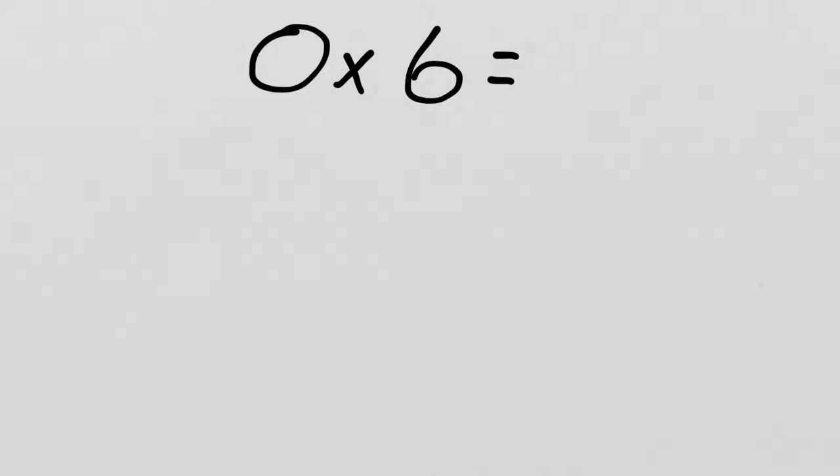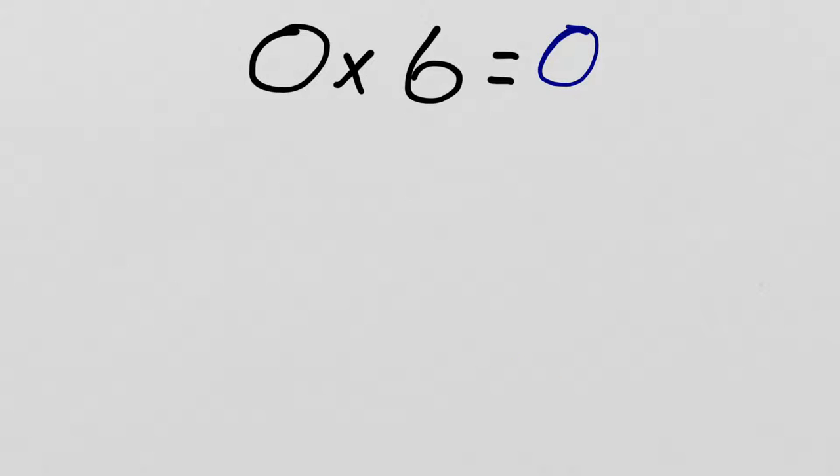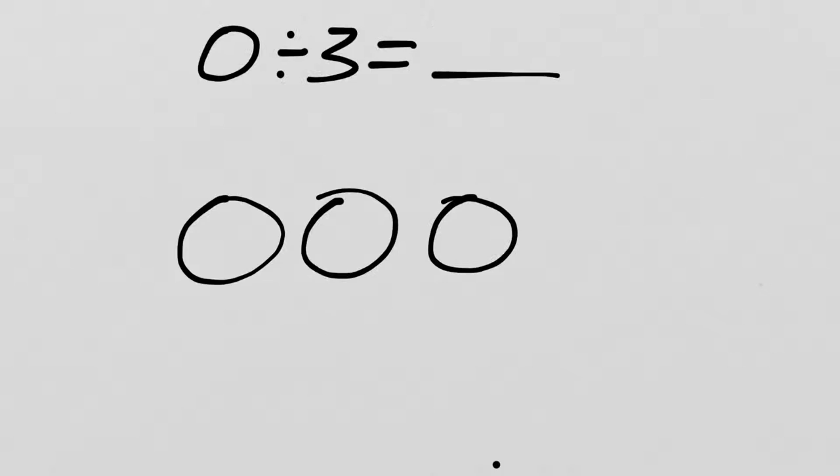Okay. I'm going to draw a picture for 0 times 6 where I'm going to draw 0 groups of 6. Okay. I did it. Do you see what I did there? I did nothing. There are no groups of 6. So, I didn't draw anything. So, how many dots are there in all? Well, there's zero. So, whether it's the number in each group or the number of groups, anything times 0 is still going to be 0.